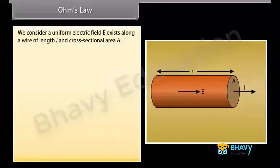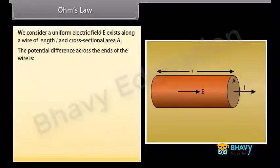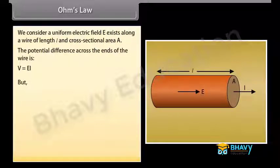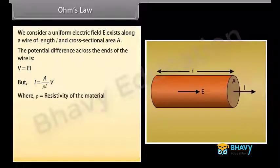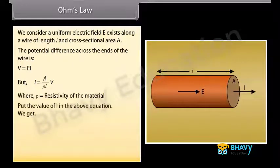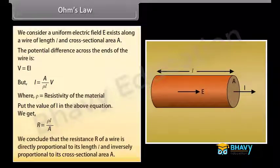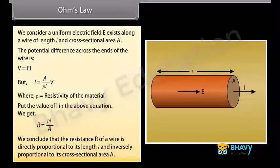We consider a uniform electric field E existing along a wire of length L and cross-sectional area A. The potential difference across the ends of the wire is given by V equals EL, and I equals A upon rho L multiplied by V, where rho is the resistivity of the material. Substituting, we get the resistance R equal to rho L upon A. We conclude that resistance R of a wire is directly proportional to its length L and inversely proportional to its cross-sectional area A.